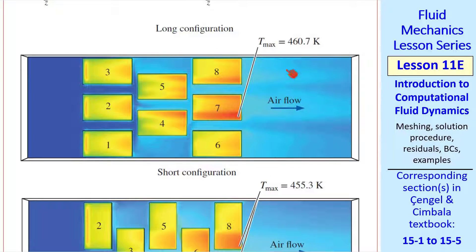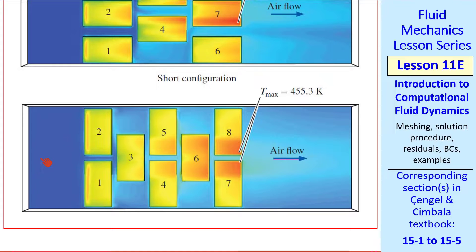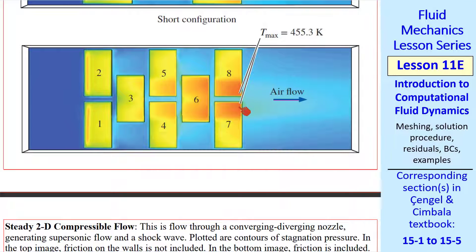Here's the results for the long configuration. The maximum temperature was at this point and was about 461K. For the short configuration, the maximum temperature occurred at these two points and was 455K. So this short configuration is the better choice if your goal was to keep the temperature as low as possible on the chip.